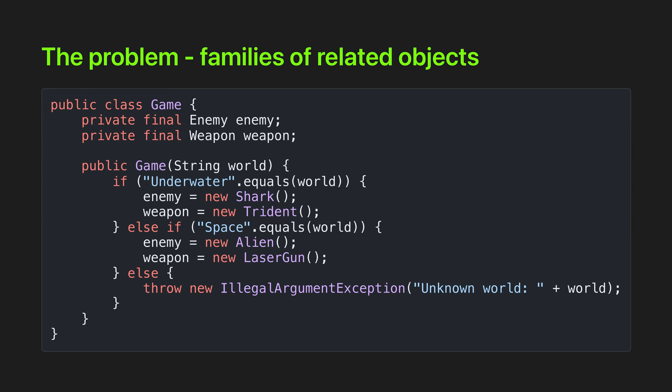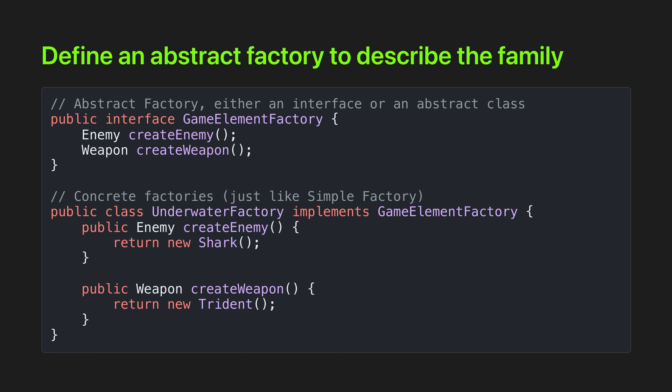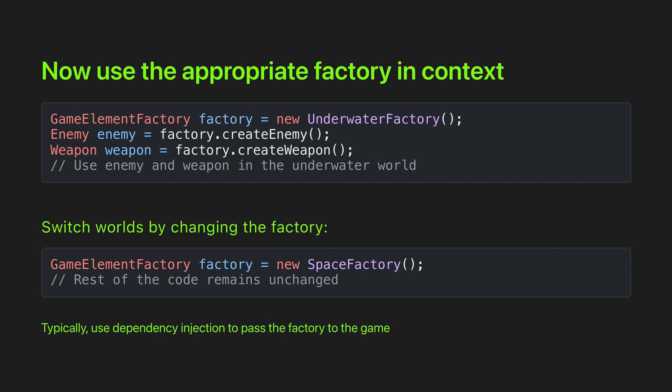So the final boss of factory patterns is the abstract factory, the most powerful factory pattern of all. The problem the abstract factory solves is families of related objects. Here we're creating a game with different environments, and which enemies and weapons are relevant vary by environment. We define an abstract factory to describe the family and create a concrete implementation for each environment that supplies the relevant enemies and weapons. Now we use the appropriate factory in context and switch worlds by changing the factory without needing to change any of our other code.